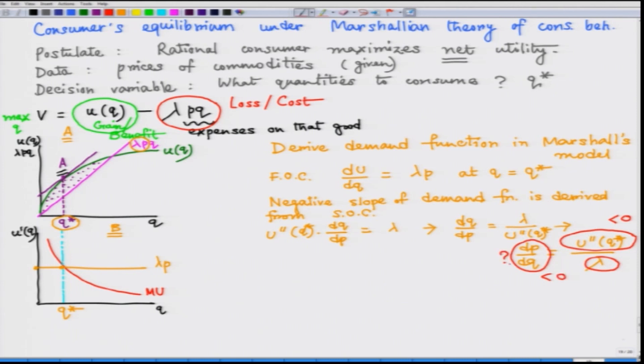What is this entity? This is the slope of the demand function. So now we have established that demand function has to be a downward sloping curve.